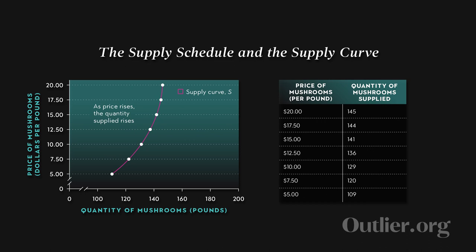Unlike the demand curve, where that was a downward relationship, for the supply curve it's an upward relationship. The higher the per unit price, the more willing suppliers are to sell a good.